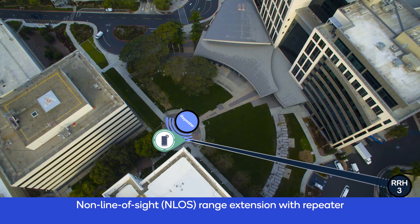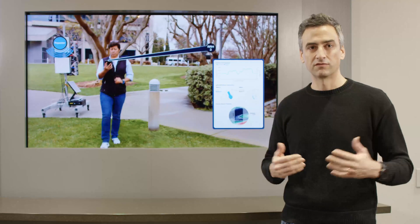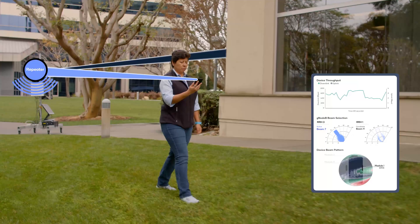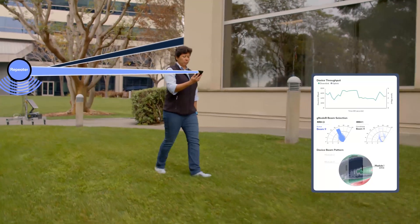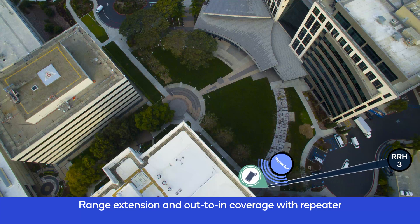As we know with millimeter wave, it's hard to get non-line-of-sight coverage unless you have good reflectors in the space, so you're bound to have coverage holes in your deployment. We show that with our prototype repeater we can actually overcome this line-of-sight diffraction loss and provide coverage and extend the coverage area.